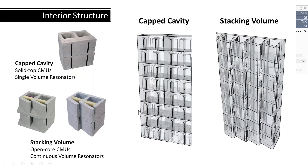Both cap cavity and stacking volume resonators have internal structures greater than the one or two inches thick that you'd see on fabric panels. So they are efficient at absorbing noise below 500 hertz, which is difficult to absorb with many other types of absorbers.